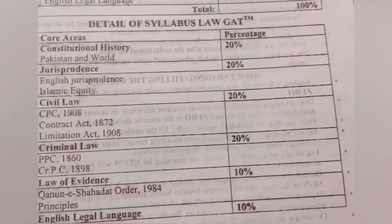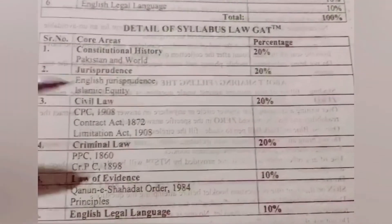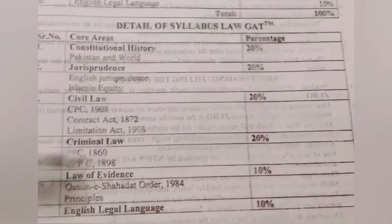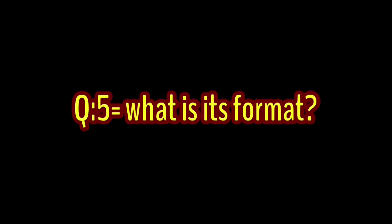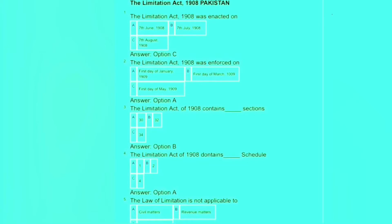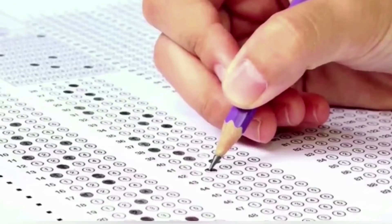Our next question is: what is the passing percentage? The answer is 50 percent. You can see the setup of percentage on screen. Our next question is: what is its format? The format will be objective type, and you can see the answer sheet on screen.